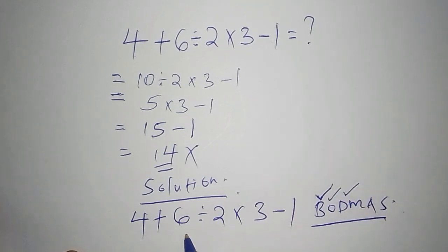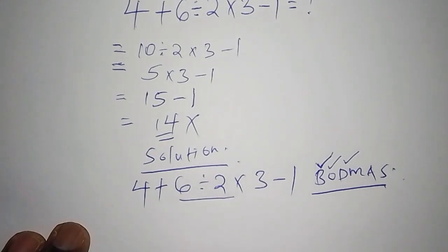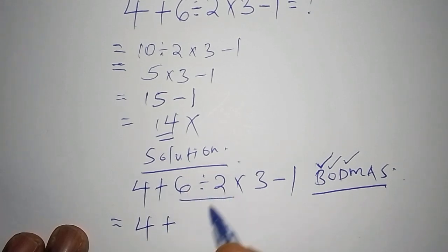So we need to work out this division first. So that is our first step. So now we shall say that this one is equals to 4 add to 6 divide by 2, we know it's 3, then 3 multiply by 3 subtract from 1.